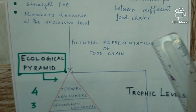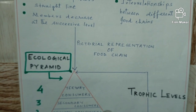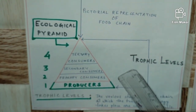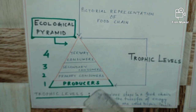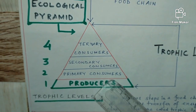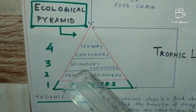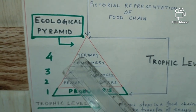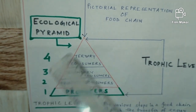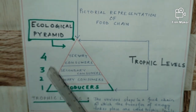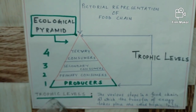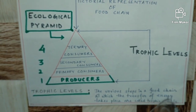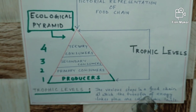If we see the pictorial representation of a food chain, we will see that the organisms existing in it form a pyramid shape. Why this shape? Because the number of organisms from the producer to the top consumers goes on decreasing. Numbers at the producer level are the highest, and it decreases at the primary consumer level, then again at secondary and tertiary consumer levels. So four trophic levels exist here. The definition of trophic level: the various steps in a food chain at which the transfer of energy takes place are called trophic levels.